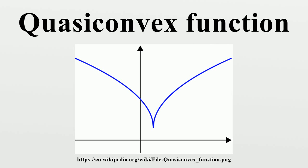A quasi-concave function is a function whose negative is quasi-convex, and a strictly quasi-convex function is a function whose negative is strictly quasi-convex. Equivalently a function is quasi-concave if, and strictly quasi-concave if. A quasi-convex function has convex lower contour sets, while a quasi-concave function has convex upper contour sets.